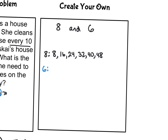Now I'm going to start with 6. 6 times 1 is 6, times 2 is 12, times 3 is 18, times 4 is 24. At this point I see that 24 is on both lists. So 24 is the least common multiple of 8 and 6.